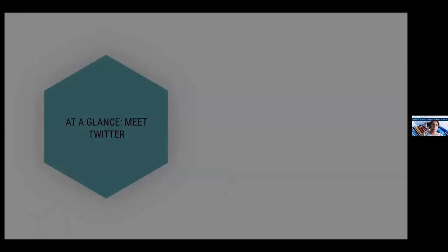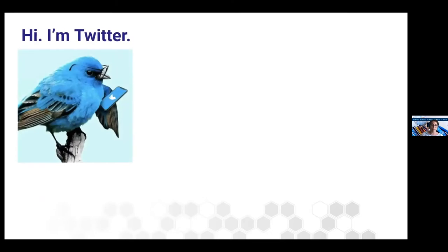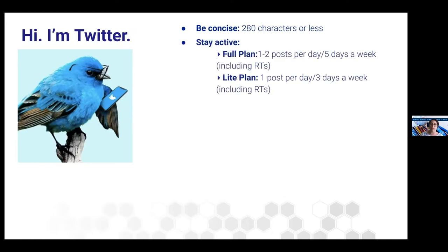So let's meet Twitter. You're going to need to learn to be concise — 280 characters or less, unless we're talking about a tweet thread, which we'll discuss in a bit. Stay active — that's the most important part of Twitter. Twitter isn't just something you can go on, post something, and then come back six months later when you have more research. You have to invest time and become part of the community.